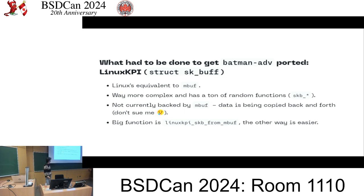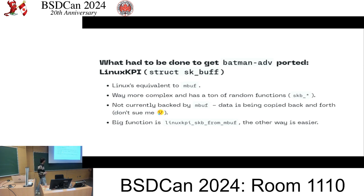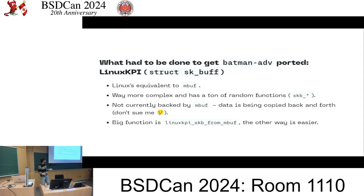The next big thing was struct sk_buff, Linux's equivalent to mbufs. They're way more complex with a ton of random functions starting with skb - it kind of feels like everything including the kitchen sink. For now, I found it easier not to properly back the sk_buff structures in the Linux KPI with mbufs. So data is being copied back and forth between mbufs and sk_buffs, which isn't ideal, but I'd like to work on getting that backed correctly. The key function is linuxkpi_skb_from_mbuf, and going the other direction - mbuf to skb - is simpler as there's less to handle.